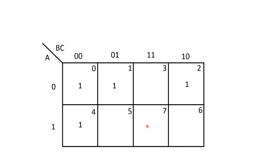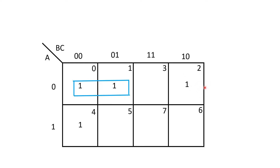The next step is to group the ones. The rule is: if cells are adjacent to each other and contain a 1, we can group those cells. Cell number 0 and cell number 1 are adjacent to each other and both contain ones, so I have grouped these cells. Cell number 0 and cell number 2 are also considered adjacent to each other, as are cell number 4 and cell number 6. So cells 0 and 2 containing ones can be grouped.